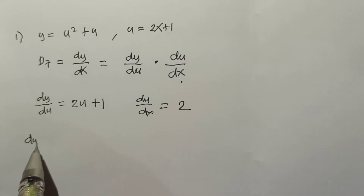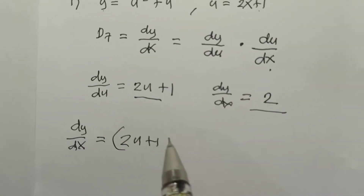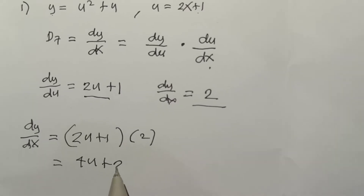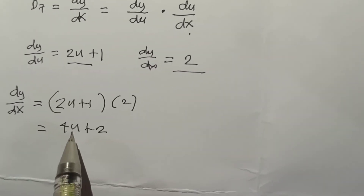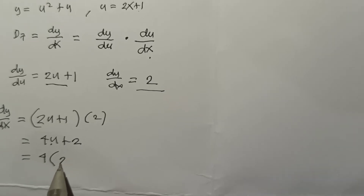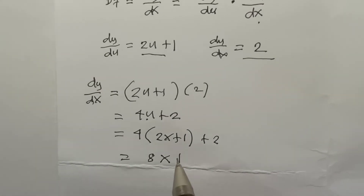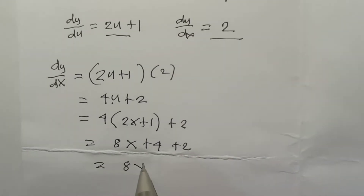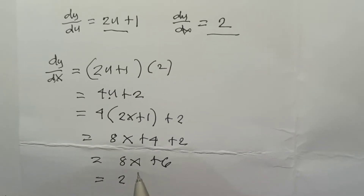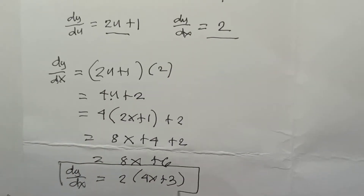To find dy/dx, we multiply: (2u + 1) times 2, which gives us 4u + 2. Now substituting the value of u = 2x + 1, we get 4(2x + 1) + 2, which equals 8x + 4 + 2 = 8x + 6. We can also factor this as 2(4x + 3).